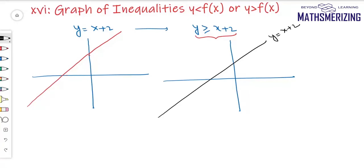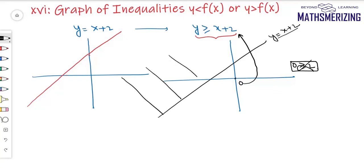In order to determine the region represented by this inequality, I'll draw the graph of y equals x plus 2, and then take any random point on either side. The simplest point is the origin. Putting x and y as 0, I get 0 is greater than or equal to 2, which is incorrect. So the solution region lies on the other side — above the line.